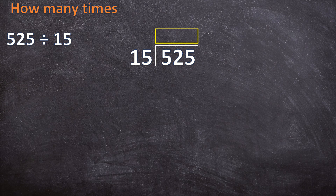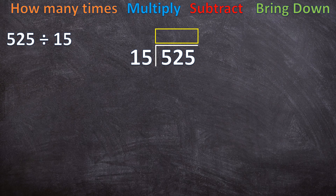The four steps are: the first step is 'how many times', the second step is 'multiply', the third step is 'subtract', and the fourth step is 'bring down'. You don't have to know what each step means yet — we'll do it step by step and you'll see how the four steps are implemented. Also remember: with long division, we work from left to right, whereas with multiplication and addition we go from right to left.